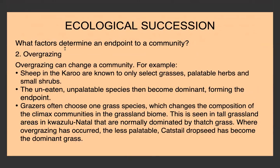Another factor determining the endpoint is overgrazing. Humans control cattle, but animals not controlled by humans can also overgraze. Things like sheep in the Karoo only eat select palatable herbs and small shrubs, so uneaten unpalatable species become dominant and form the endpoint. Grazers often choose one grass species and only eat that, changing the composition of climax communities in the grassland biome. This is seen in tall grassland areas in KwaZulu-Natal, which are normally dominated by thatch grass, but where overgrazing has occurred, the less palatable cat's tail dropseed becomes dominant instead.